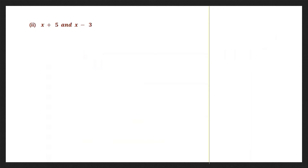Question 2. Again we have two binomials. So let's write them down one below the other. We have x plus 5 into x minus 3.